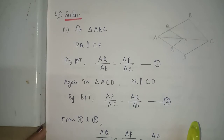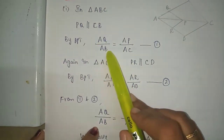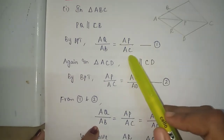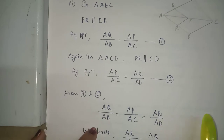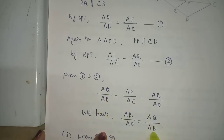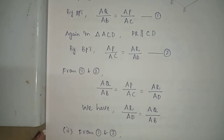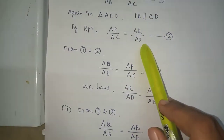Using equations 1 and 2, we can write AQ by AB is equal to AP by AC is equal to AR by AD. Therefore AR by AD is equal to AQ by AB. Hence the first subdivision is proved.